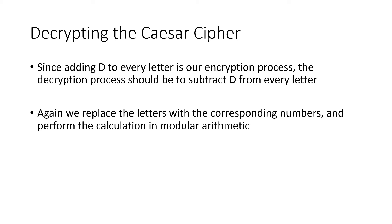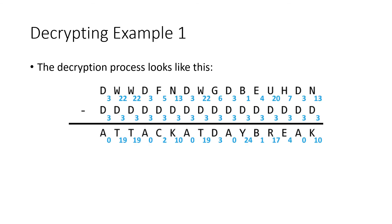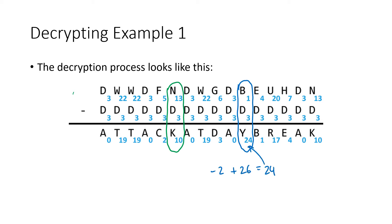Now if we want to decrypt the Caesar cipher, the opposite of adding D is to subtract D. We replace the letters with their corresponding numbers, perform the arithmetic, and use modular arithmetic by adding or subtracting 26 if the result is too big or too small. For example, to decrypt the letter N: replace N by 13, take 13 minus 3 equals 10, and letter 10 is K. And when we decrypt the letter B: 1 minus 3 equals negative 2, but negative 2 is too low, so we add 26 to get 24, and 24 corresponds to the letter Y.